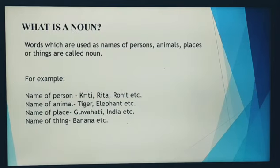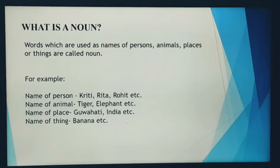Let us first discuss what is a noun. We know that any word used to denote the name of a person, place, animal or thing is called a noun. For example, names of persons like Rita, Rohit, Kriti, or names of animals like tiger.